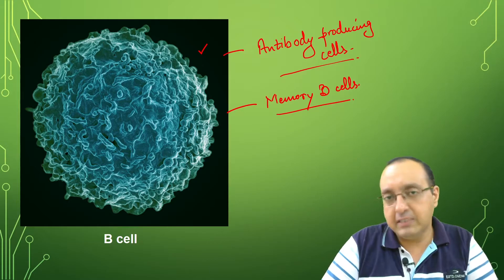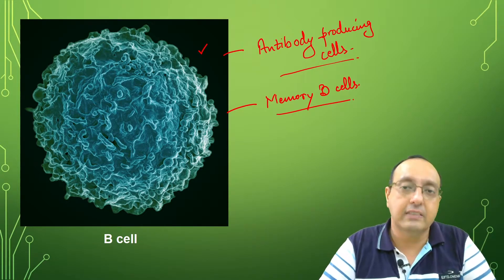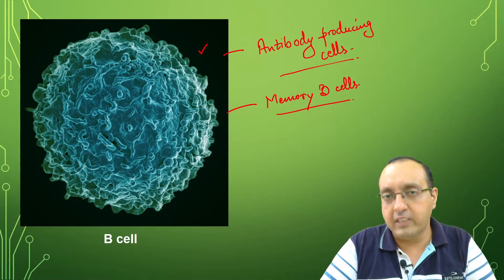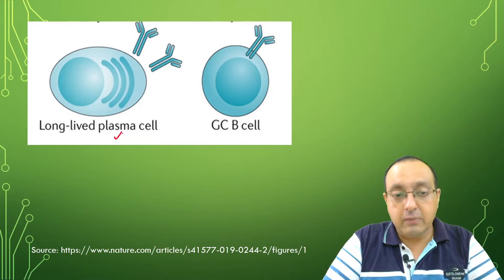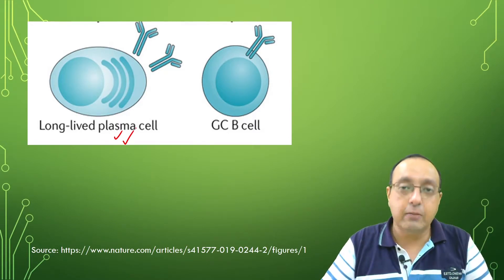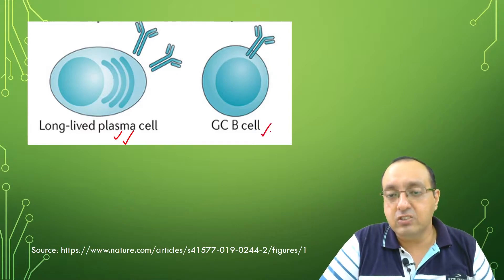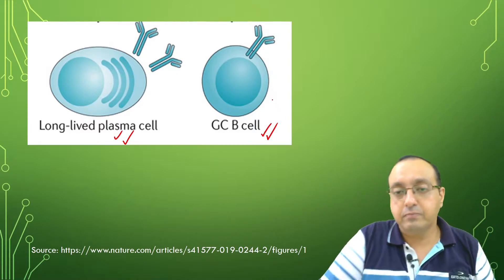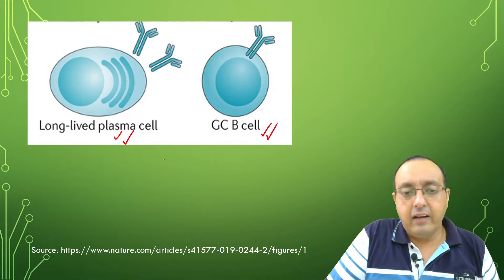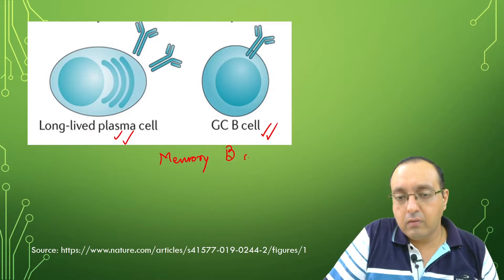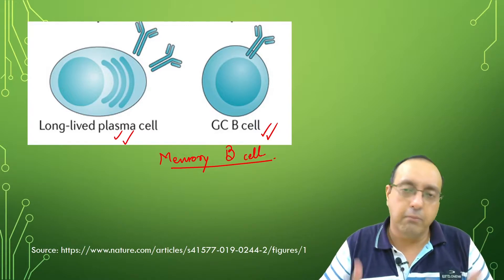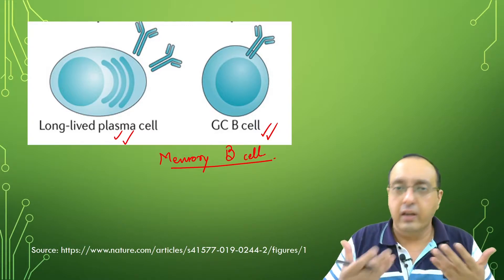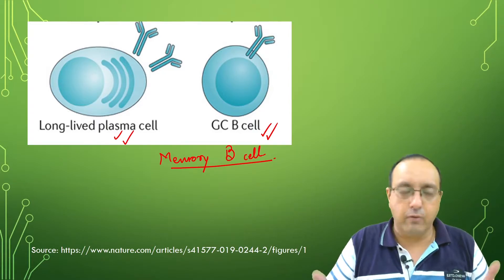B cells produce antibodies which are immunoglobulins, glycoproteins with sugar moieties attached. We have long-lived plasma cells which continue to secrete antibodies into blood plasma, and the germinal center B cell which is the naive B cell. Later we have the memory B cell, which is quiescent and doesn't actively secrete antibodies but is ready to respond to infection if it occurs again in the organism's lifetime.